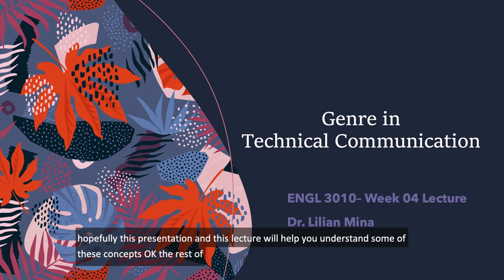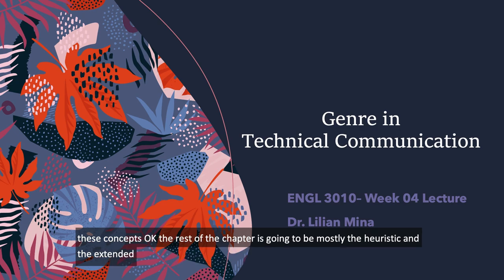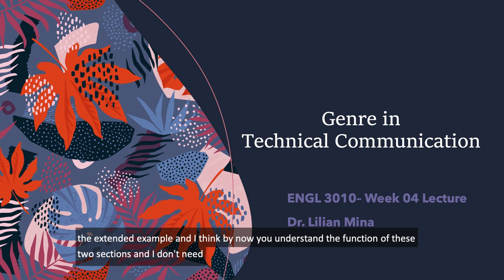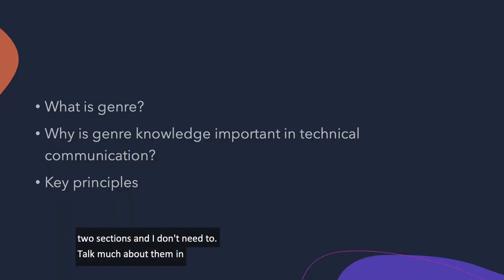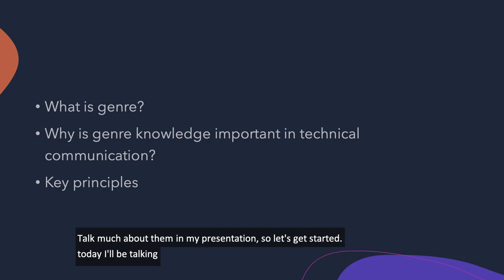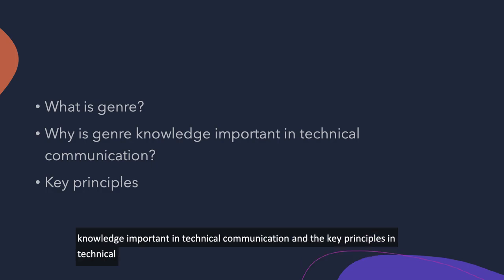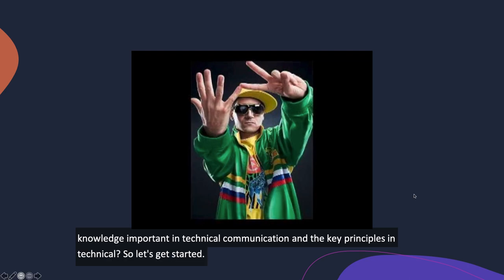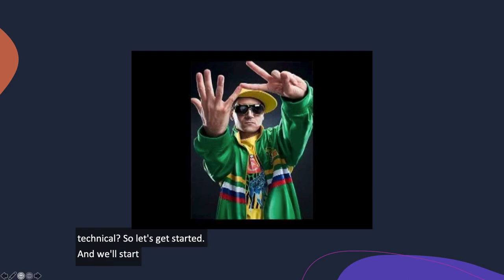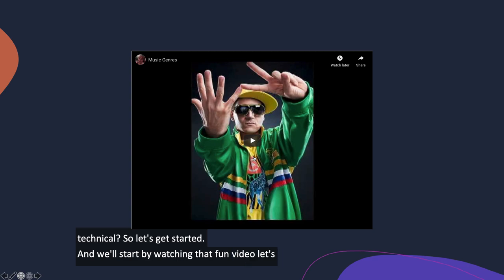The rest of the chapter is going to be mostly the heuristic and the extended example, and I think by now you understand the function of those two sections — I don't need to talk much about them in my presentation. So let's get started. Today I'll be talking about three main things: what is genre, why is genre knowledge important in technical communication, and the key principles in technical communication. We'll start by watching that fun video.